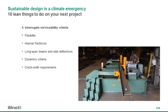Number four: interrogating serviceability criteria. We should be doing this anyway, but if serviceability criteria are your limiting criteria, it's even more important. Do we need that one millimetre deflection limit for our facades? Can we have deflection heads for internal partitions? Doing a basic comparison — how much extra steelwork or concrete do you need for a one millimetre deflection limit versus using a deflection head, and how much steel or timber could you save? We could be throwing a lot of extra material into our buildings to satisfy something we didn't interrogate fully.